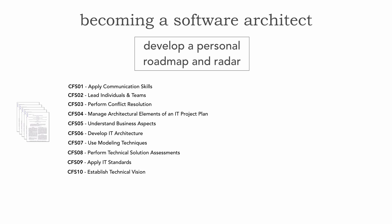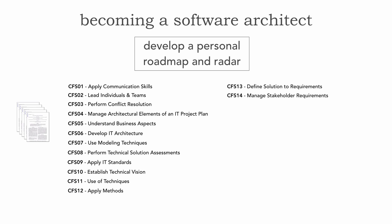CFS 10 is establishing the technical vision, which relates to the balance between being pragmatic yet visionary that I discussed in a prior video. There's also the use of techniques and applying methods of architecture, going through modeling techniques such as data analysis, component analysis, or even the use of ATAM or CBAM. CFS 12 covers defining solutions to requirements, and CFS 13 covers managing stakeholder requirements — all about collaboration to understand how requirements are being satisfied through the architecture.